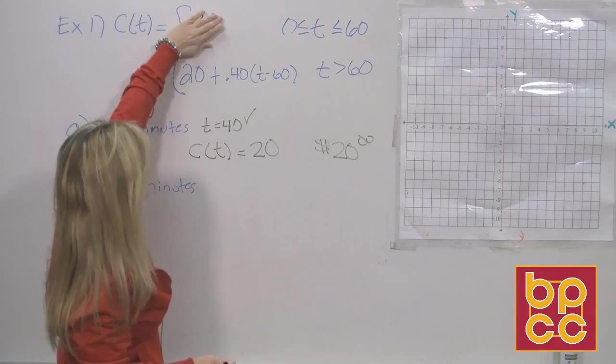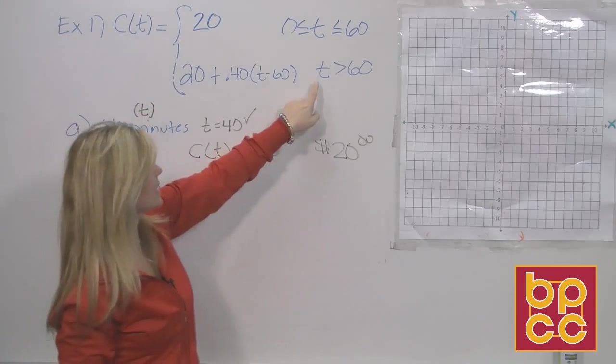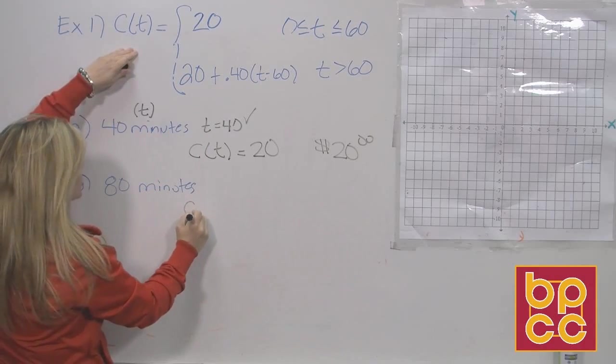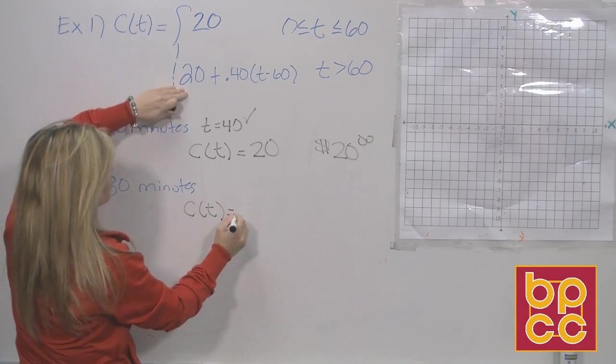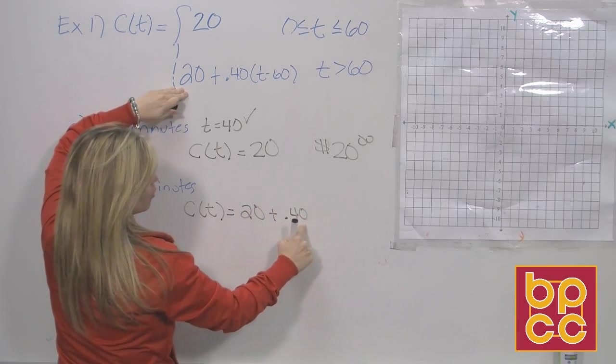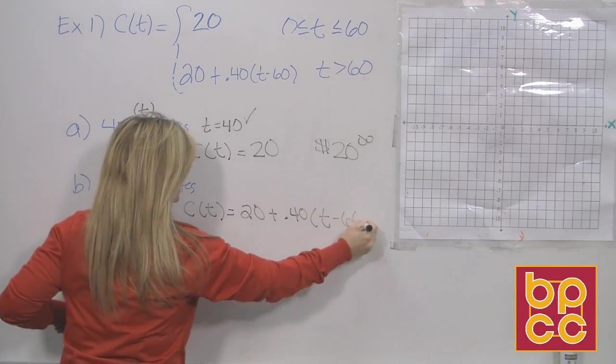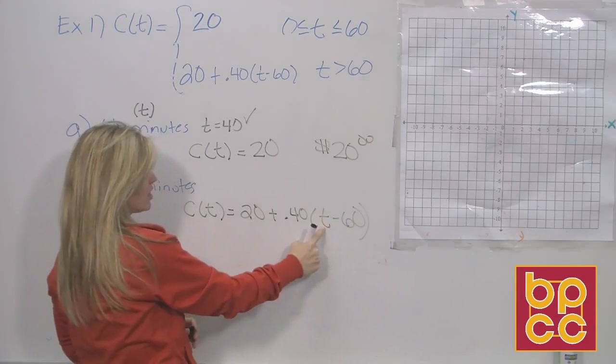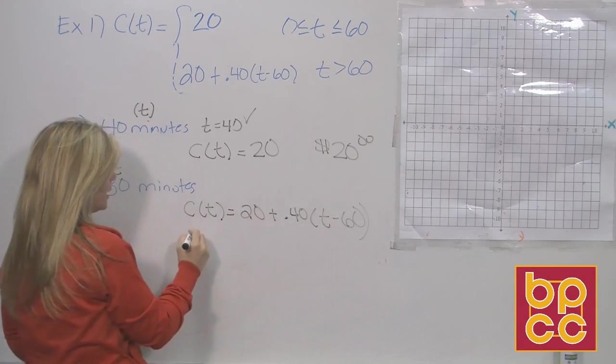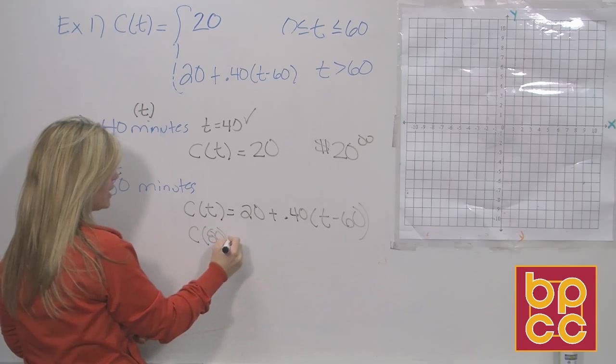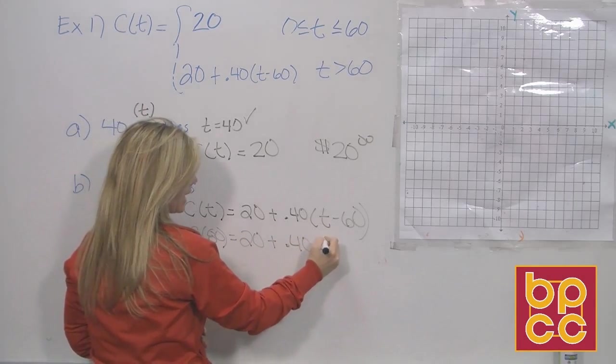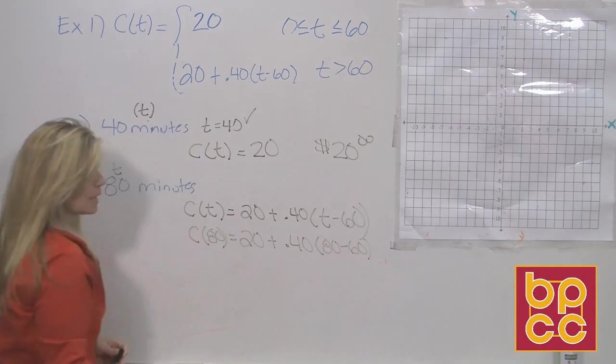Is 80 greater than 60? Yes, it is. So we're looking at the bottom. So our equation is c of t equals this bottom piece, 20 plus 40 cents, t minus 60. And now because we have a variable in here, t, and we know t is our time talking, 80, we'll just substitute it in. We'll write the cost for 80 minutes would equal 20 plus the 40 cents, 80 minus 60. And that makes sense.